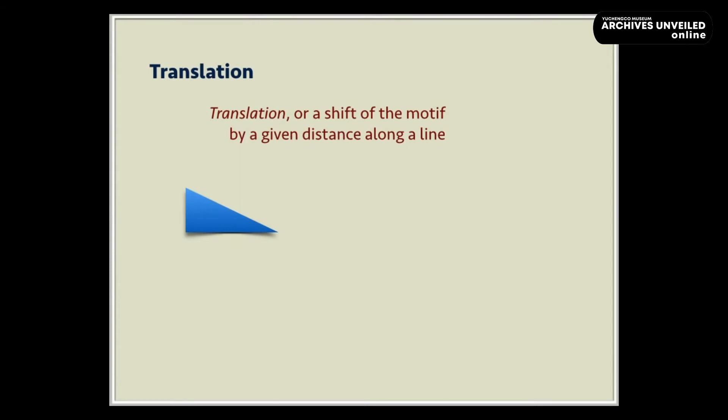It can be proven mathematically that there are four symmetries in the plane. One symmetry is a translation. A translation shifts the motif, in this case a triangle, by a given distance along the line. The symmetry is indicated by a vector as shown to denote the distance and direction of the shift.